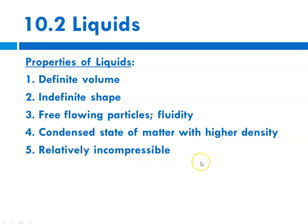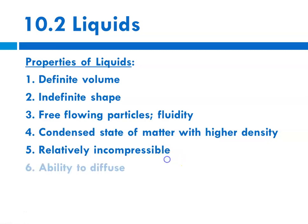With gases, the particles are small relative to the volume of whatever container they're in, so the particles of a gas are far apart, where with liquids they're closer together. They have lower energy than gases — remember kinetic theory — and they're relatively incompressible, meaning you can't compress them. You can't smush them closer together because they're already pretty close together. They have the ability to diffuse, and they exhibit something called surface tension.